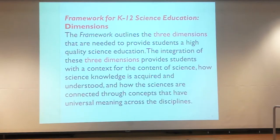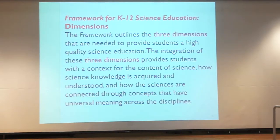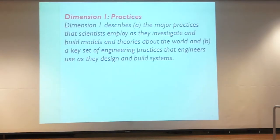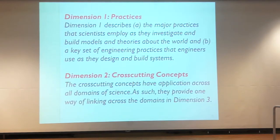The framework from which the NGSS were formed describes three dimensions needed to provide students a high-quality science education. Dimension one is practices — the major practices scientists employ as they investigate and build models and theories, and a key set of engineering practices. Dimension two is cross-cutting concepts, which have application across all domains of science, providing a way of linking across the different domains.